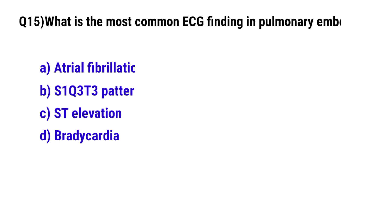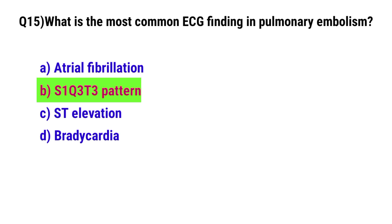Question No. 15. What is the most common ECG finding in pulmonary embolism? The correct option is B: S1Q3T3.